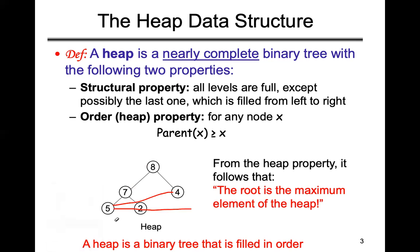The heap order property states that the parent node should always be greater than its children nodes. For example, parent node 8 is greater than 7 and 4; 7 is also a parent node and is greater than 5 and 2. These two properties — the order property and the structural property — must both be maintained. That is the definition of a heap.